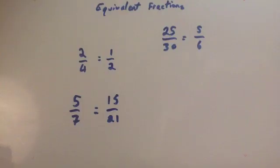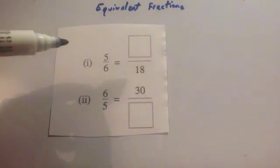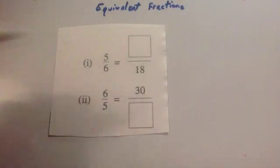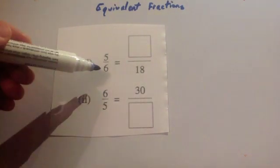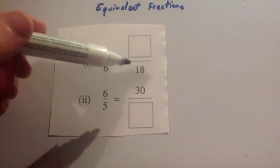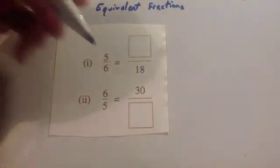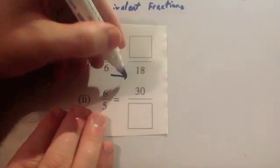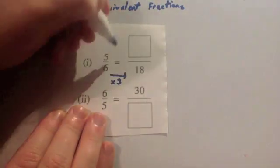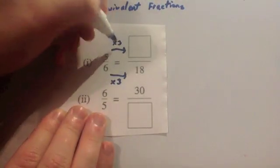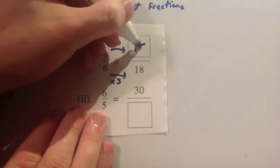Let's look at some exam questions. So here's an exam question with two parts. It's got 5 sixths equals blank over 18 and you've got to work out what this number here is. So to get from 6 to 18 you would times by 3. So you times the top number by 3 as well and 5 times 3 would be 15.